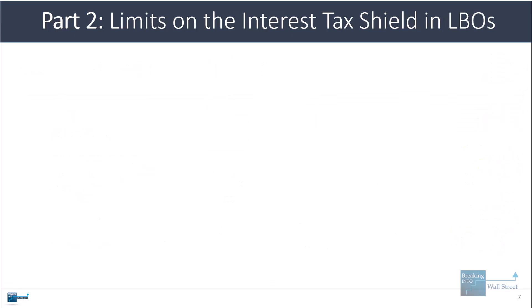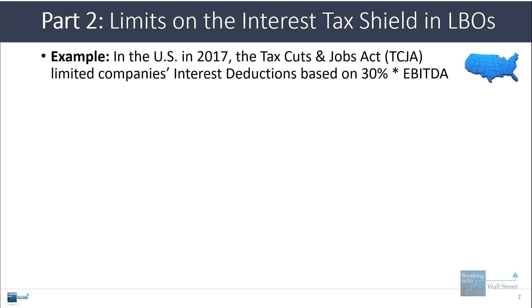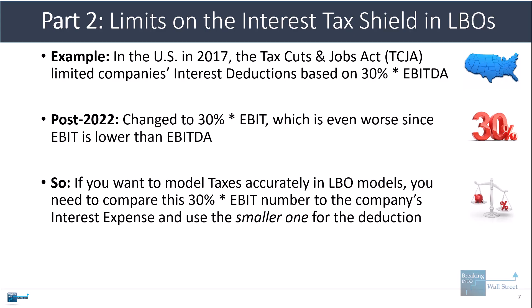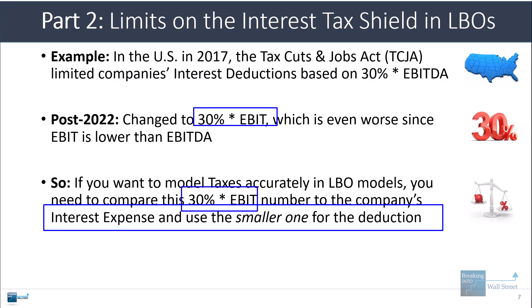Let's talk about limits on the interest tax shield in LBOs. In the U.S., the 2017 Tax Cuts and Jobs Act put limits on how much companies could deduct. Initially the limit was 30% times EBITDA. In 2022, this changed to 30% times EBIT, which is worse because EBIT is lower than EBITDA since it deducts depreciation and amortization. To model taxes accurately in LBO models, you compare 30% times EBIT to the company's total interest expense and use the smaller one for the deduction.